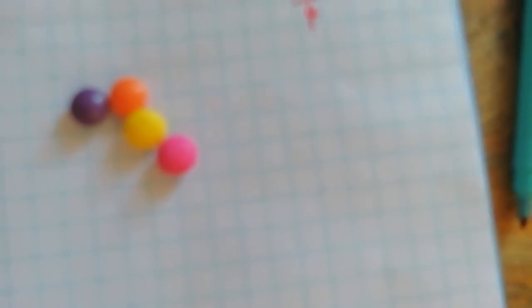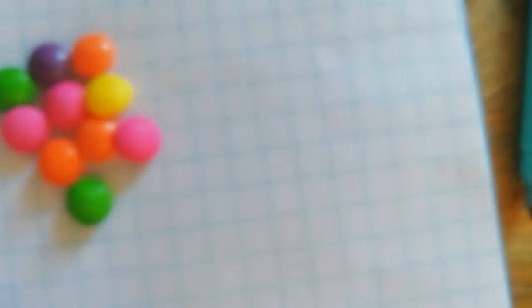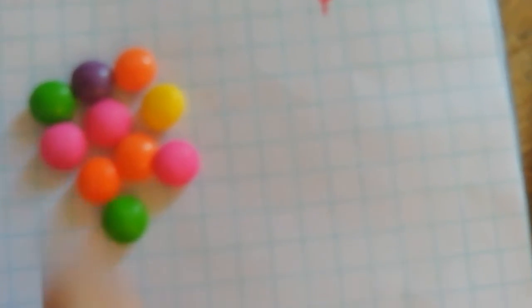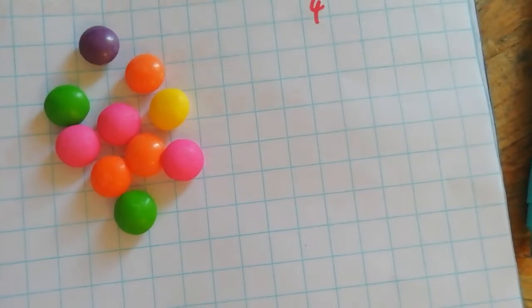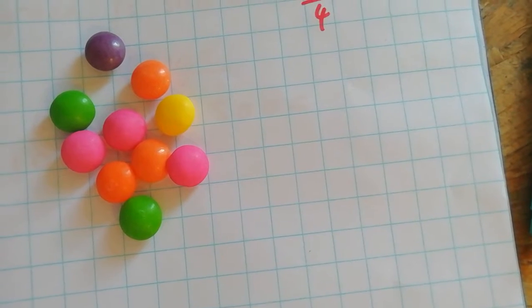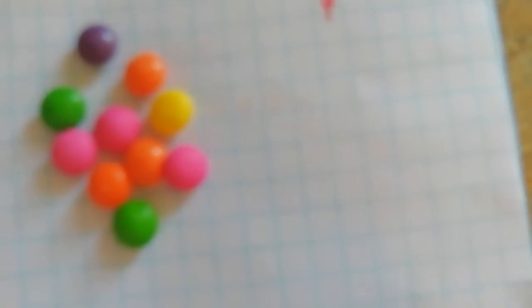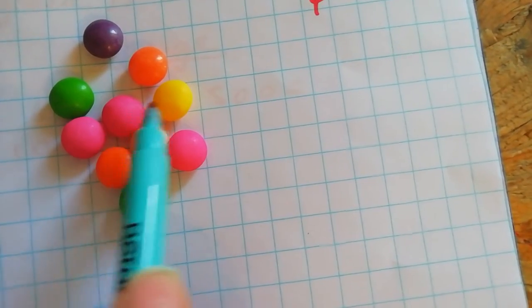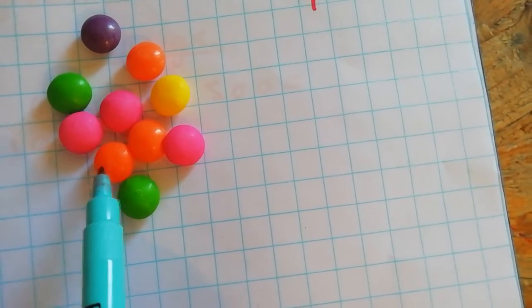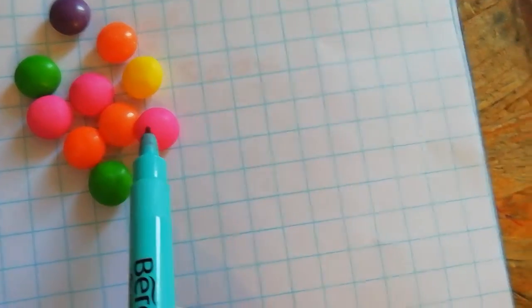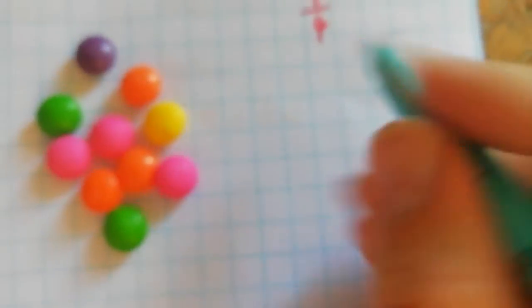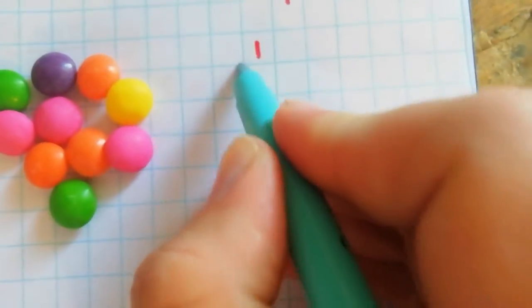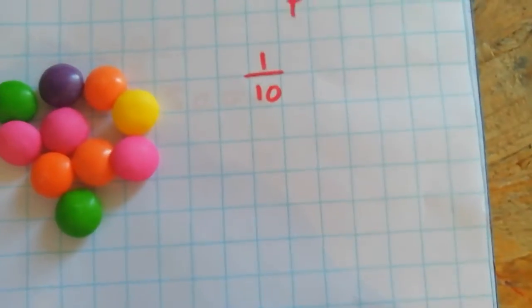Let's add a whole bunch more. Wow, I've got lots now. What fraction of these are purple? I can see one purple sweet out of a total of one, two, three, four, five, six, seven, eight, nine, ten. So right now out of all of these there is one tenth that is purple.